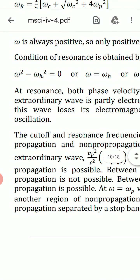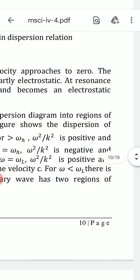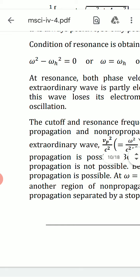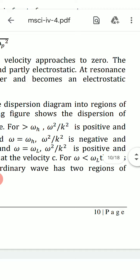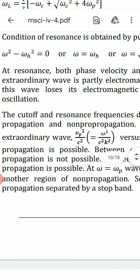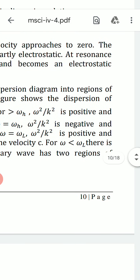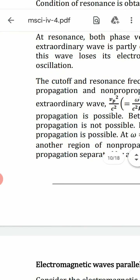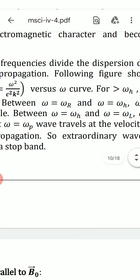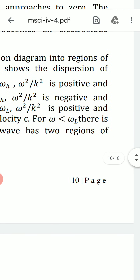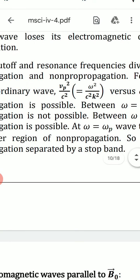At resonance, both phase velocity and group velocity approach 0. The extraordinary wave is partly electromagnetic and partly electrostatic. At resonance, this wave loses its electromagnetic character and becomes an electrostatic oscillation. The cutoff and resonance frequencies divide the dispersion diagram into regions of propagation and non-propagation.